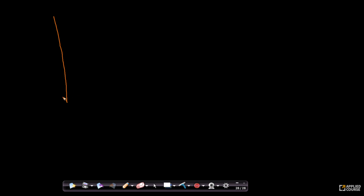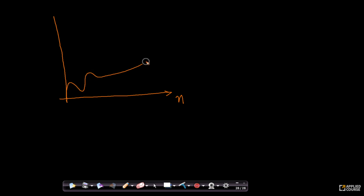Let me draw a diagram and explain it, then connect the diagram with the mathematical formulation. Imagine this is my input size, and let us say my f of n looks like this — this is my time or space complexity. This is my y-axis and this is my x-axis.